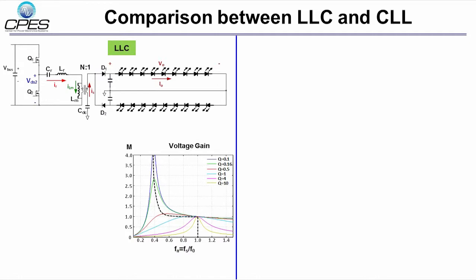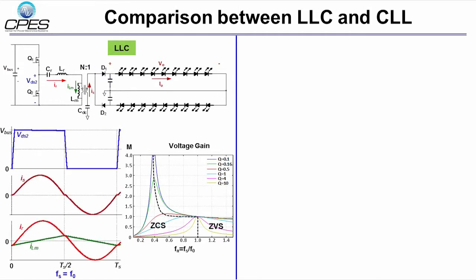On the left-hand side of the dashed line, it is ZCS zone for Q1 and Q2. On the right-hand side, it is ZVS zone for Q1 and Q2. When LLC is working around the resonant frequency, the secondary side rectifiers D1 and D2 can achieve ZCS. The primary side switches Q1 and Q2 can achieve ZVS.